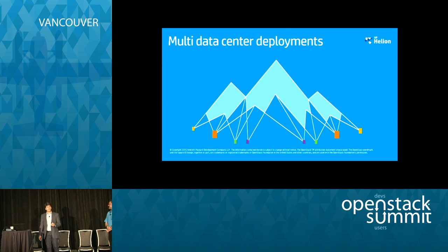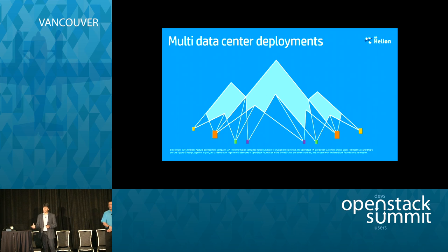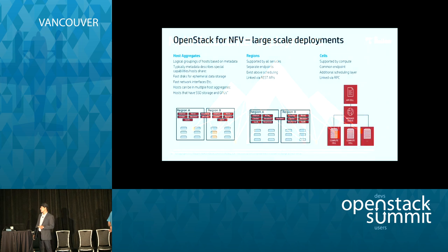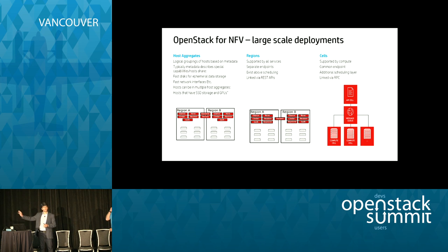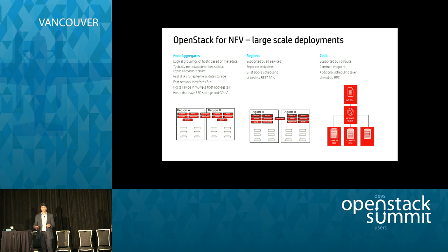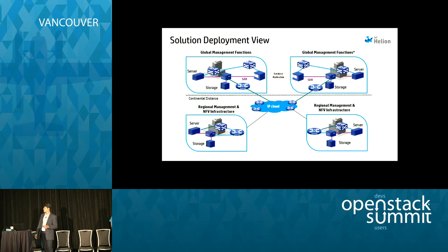We talked about how important security is for carriers and how a carrier-grade platform is important. We also want to talk about how a carrier-grade distributed environment can be deployed — that's a key ask from carriers. OpenStack is already helping enterprises with regions, host aggregates, availability zone cells — you can continue growing your control plane to support an expanding compute base. But that isn't adequate for what carriers are asking.